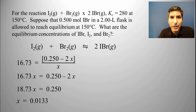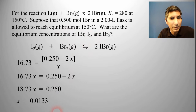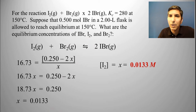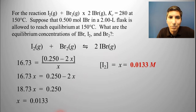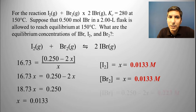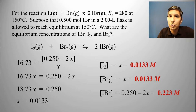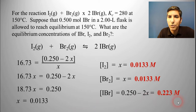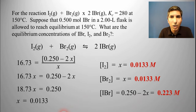Now let's use that X value to answer the question and find the equilibrium concentrations of all three substances. I2's equilibrium value was just X, so that's 0.0133 moles per liter. Br2 was the same — also 0.0133 moles per liter. IBr was 0.250 minus 2 times X, and when you evaluate that expression, IBr's equilibrium concentration is 0.223 molar. That's a fairly straightforward way to solve for all these equilibrium concentrations.